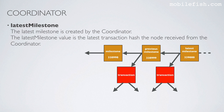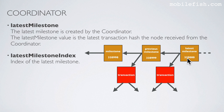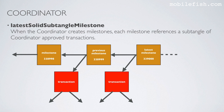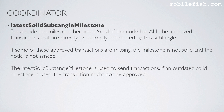The latest milestone is created by the coordinator. The latest milestone value is the latest transaction hash the node received from the coordinator. This is the index of the latest milestone. When the coordinator creates milestones, each milestone references a subtangle of coordinator-approved transactions. For a node, this milestone becomes solid if the node has all the approved transactions that are directly or indirectly referenced by this subtangle. If some of these approved transactions are missing, the milestone is not solid and the node is not synced.